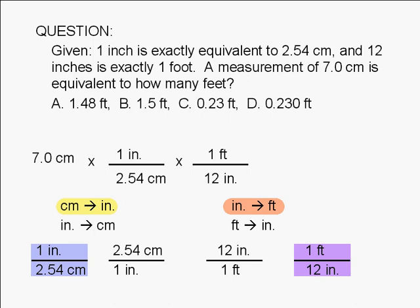Punching all of these numbers in a calculator gives us 0.22966 feet, which should be rounded off to only two significant figures. Therefore, the correct answer is C, 0.23 feet.